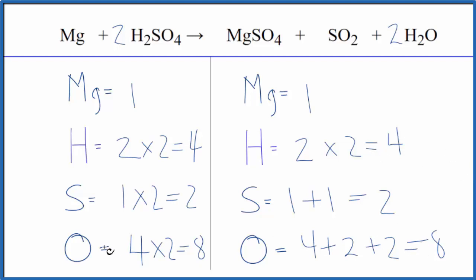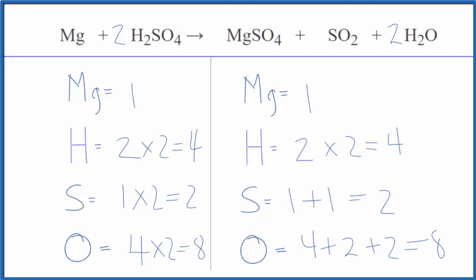The key here: leave the oxygen till last — that's often very effective. Leave the hydrogen till later. I started with the sulfur, and things just kind of worked out. This is Dr. B with the balanced equation for Mg plus H2SO4, magnesium plus sulfuric acid. Thanks for watching.